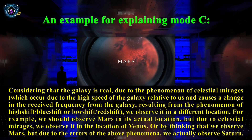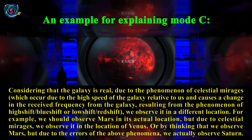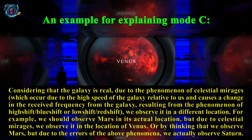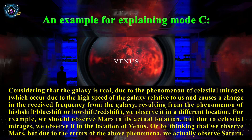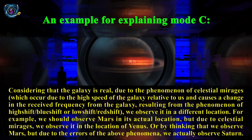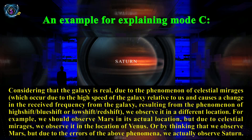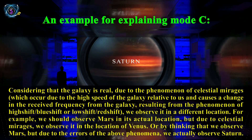An example for explaining mode C: Considering that the galaxy is real, due to the phenomenon of celestial mirages — which occur due to the high speed of the galaxy relative to us, causing a change in the received frequency resulting from high shift, blue shift, or low shift, red shift — we observe it in a different location. For example, we should observe Mars in its actual location, but due to celestial mirages, we observe it in the location of Venus. Or, thinking we observe Mars, due to the errors of the above phenomena, we actually observe Saturn.